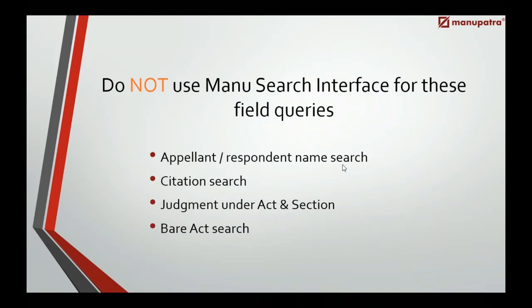We suggest you do not search for the following in Manu Search: appellant or respondent party names, citations, judgments under act and section, or bare acts. When you search a party name like 'United Breweries,' it will give you all judgments where that word is used — including where the judgment is merely referred to. The same issue applies to citations. We suggest you avoid this.